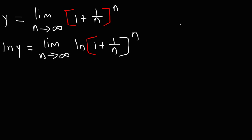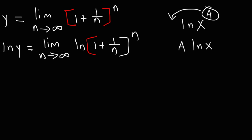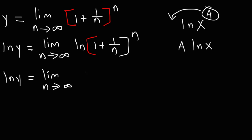Now a property of logs: if we have log of x raised to the a, we can take the exponent and move it to the front. So ln of x raised to the a power is a times ln x. Applying this, we move n to the front, giving us ln y equals the limit as n goes to infinity of n times the natural log of 1 plus 1 over n.